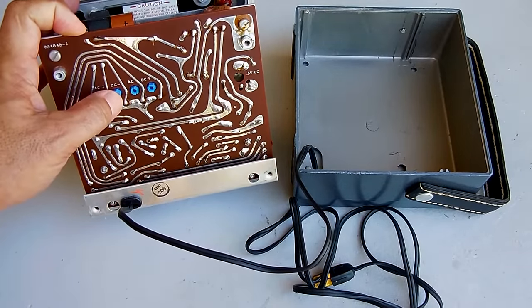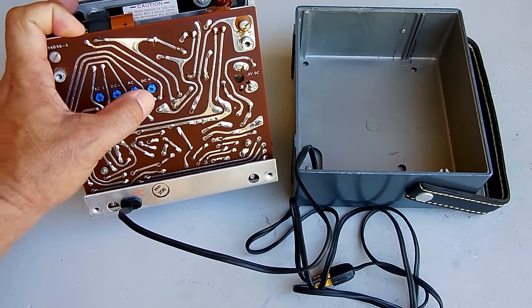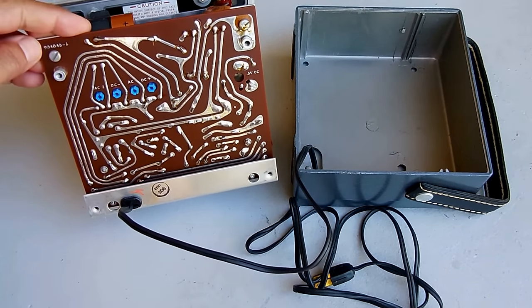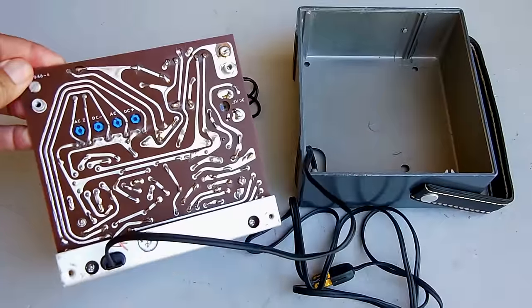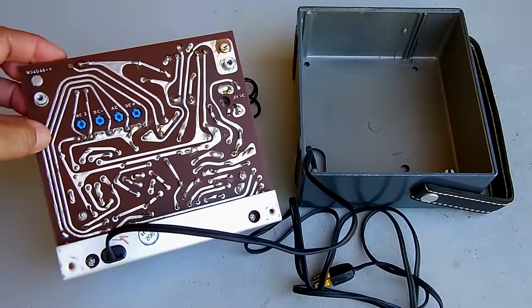Over here, you can see the adjustments, AC zero, that's an adjustment for DC negative, another adjustment for AC voltage, and DC positive. You can see all the traces, very, very heavy, coated in solder.